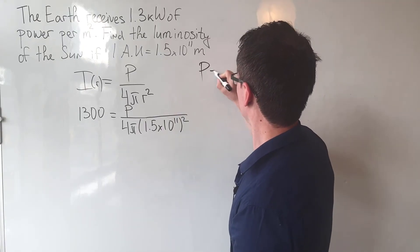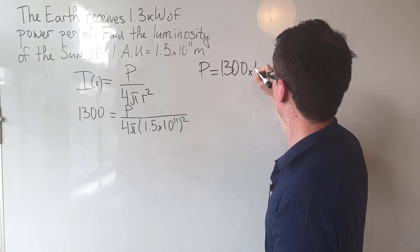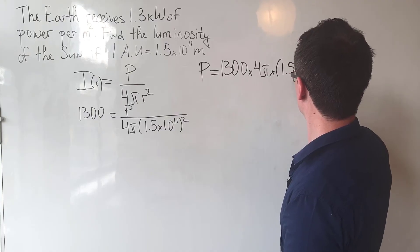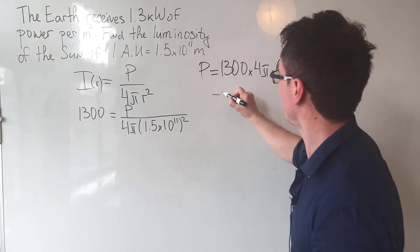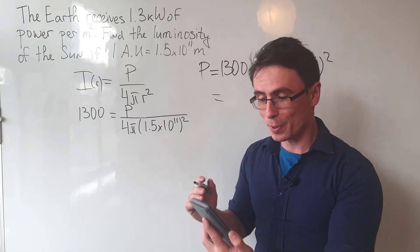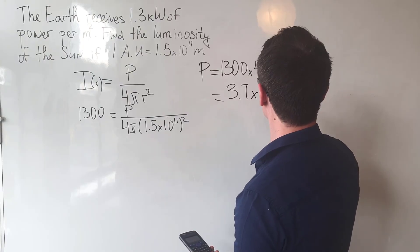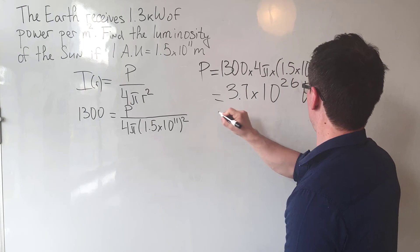So the power is equal to 1,300 times 4π times 1.5 times 10 to the power of 11, all of it squared. And if we put this into a calculator, we are going to get around 3.7 times 10 to the power of 26 watts.